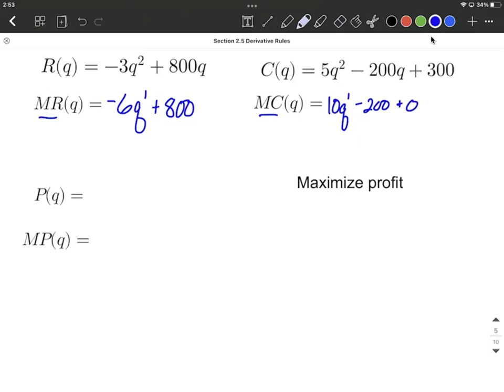Alright, so we now have marginal revenue and marginal cost. Next, let's set up our profit function. So our profit function is always going to be given by the revenue minus the cost. Because revenue is like all the money you bring in, and then you want to subtract away any of the costs.